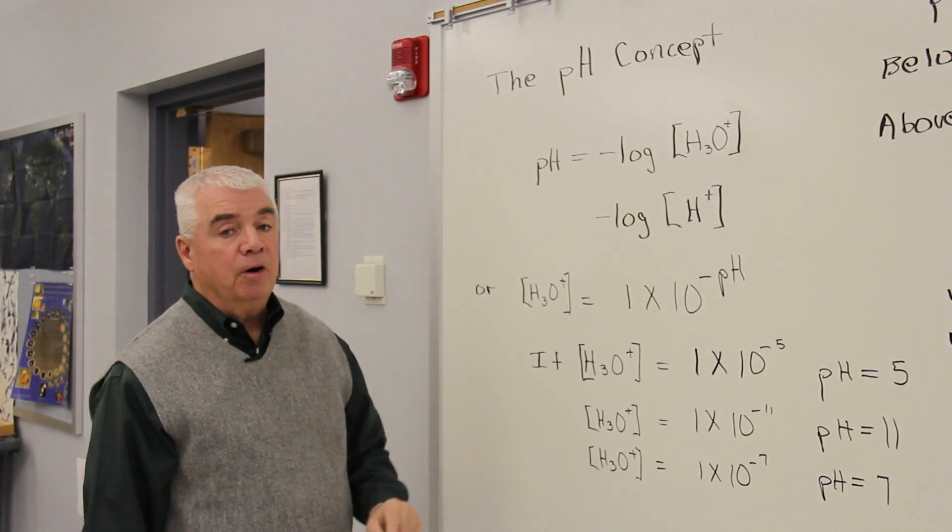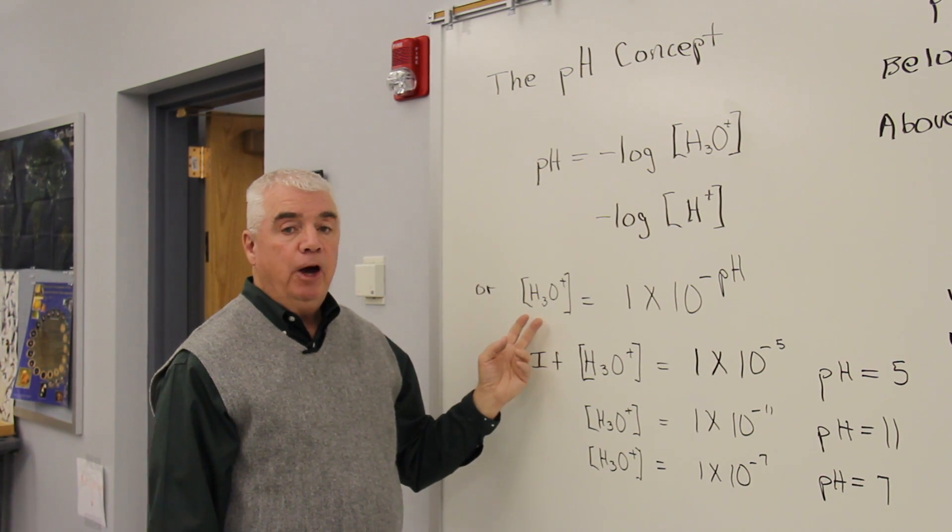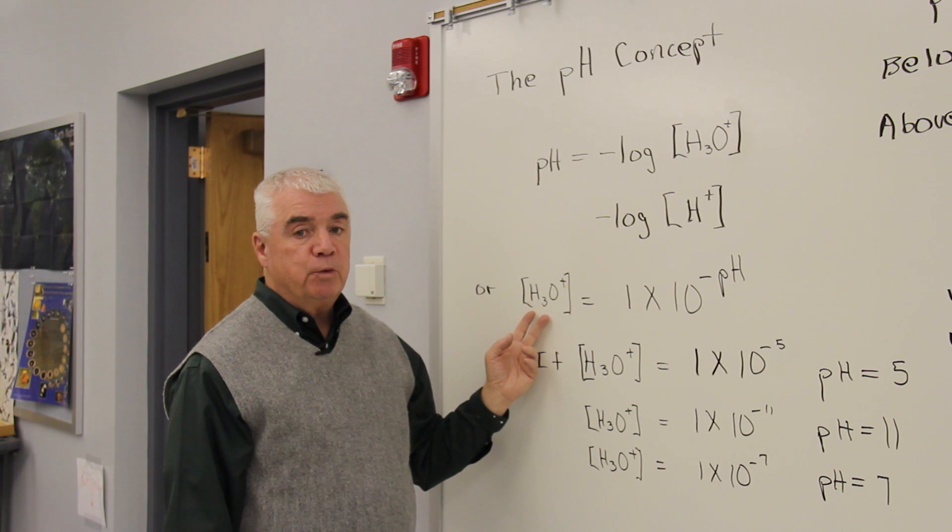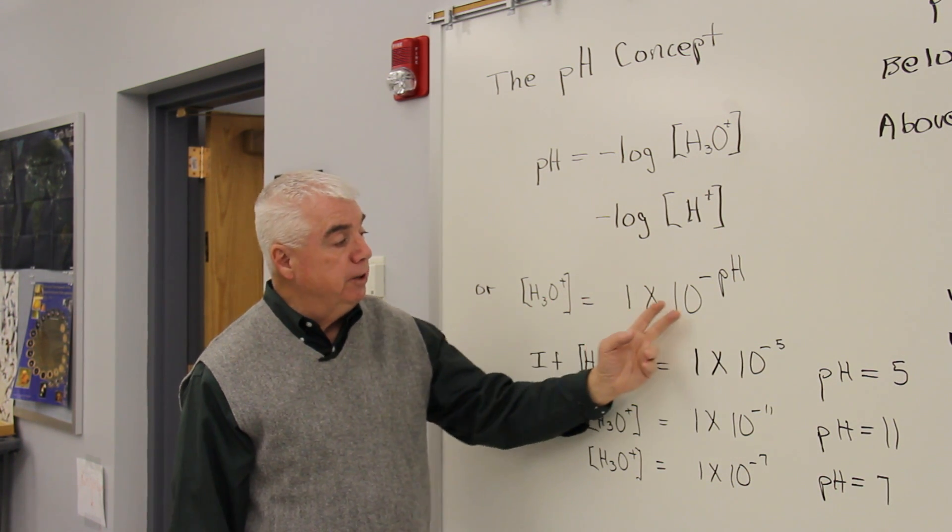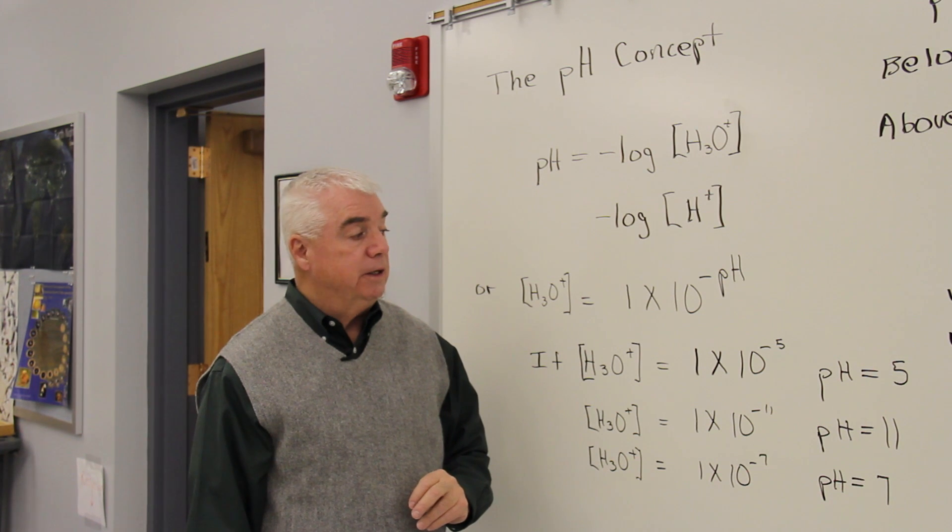A little simpler formula, if we rearrange this, is that if you have a concentration of H3O plus expressed in this format, this number up here, the exponent, is the pH.